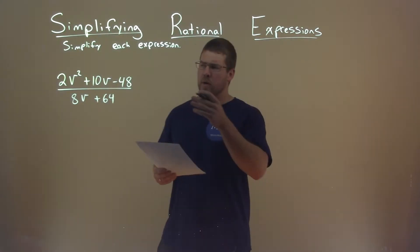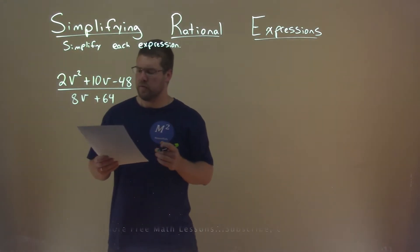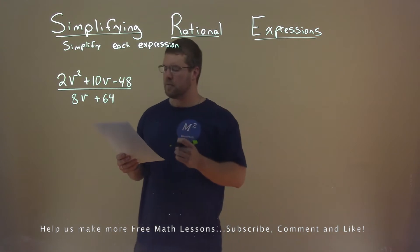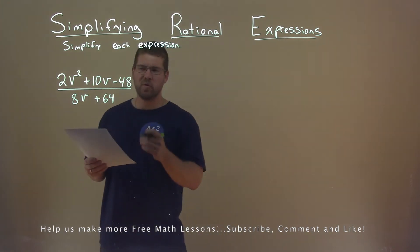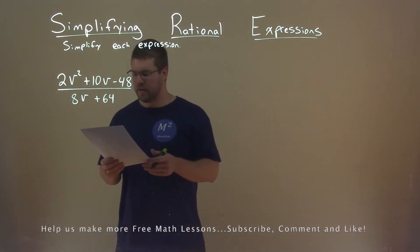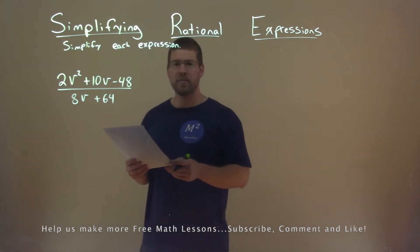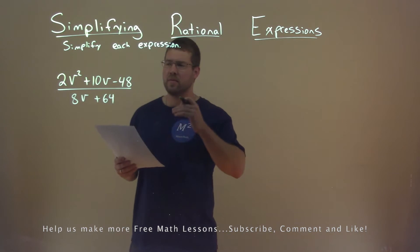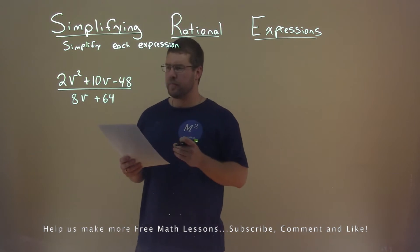We're given this expression right here: 2v squared plus 10v minus 48 over 8v plus 64, and we want to simplify this expression.